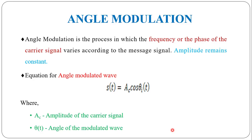Angle modulation basically comprises two types: one is frequency modulation and the other one is phase modulation. When the frequency or phase of the carrier signal is varied with respect to the message signal, it is called angle modulation. In both cases, the amplitude remains constant.